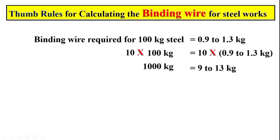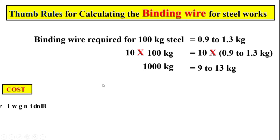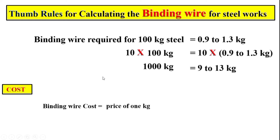Remember, there is no specific formula to calculate the quantity of binding wire — this thumb rule is the easy approach. Now if we calculate the cost of binding wire, the cost equals the price of 1 kg of binding wire multiplied by the total number of kg required.